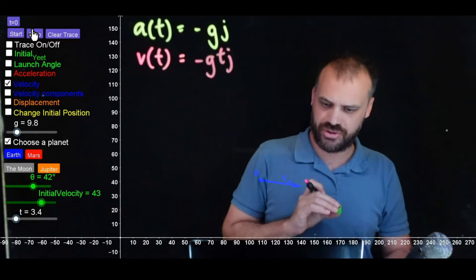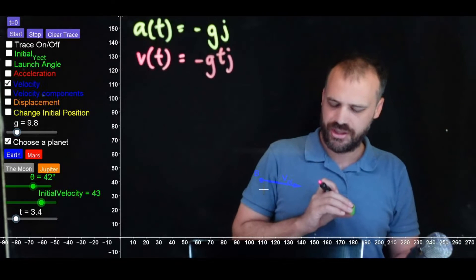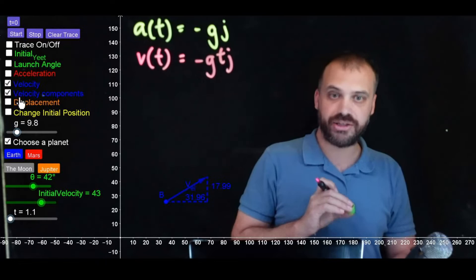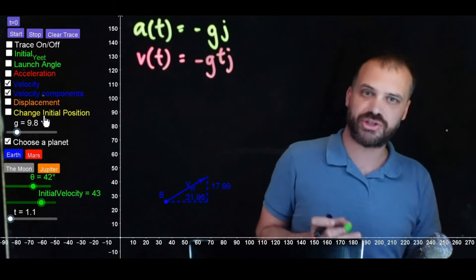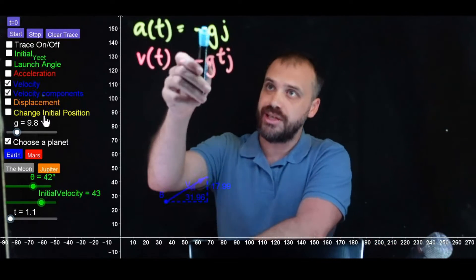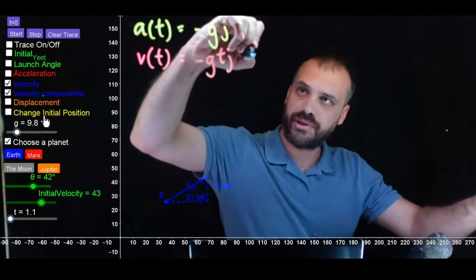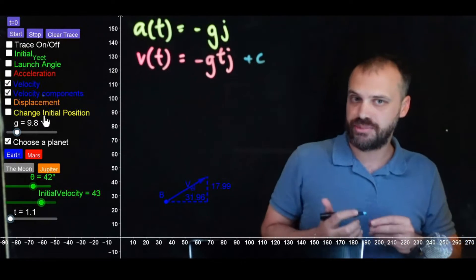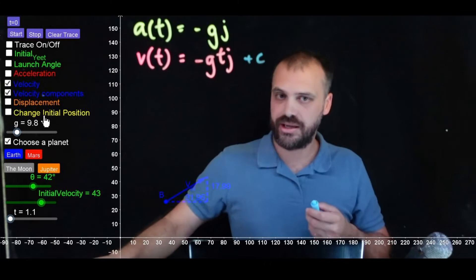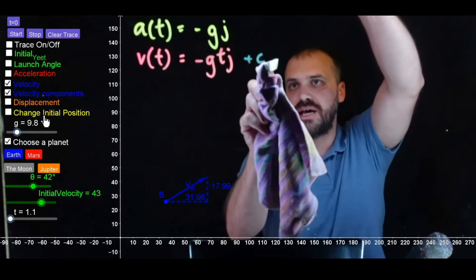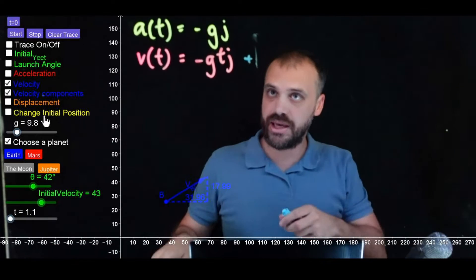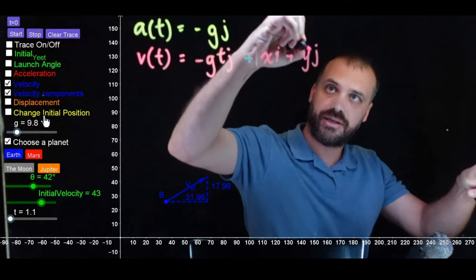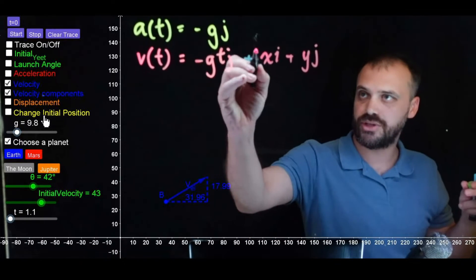You might think that's not going to describe this vector because this vector is made up of i and j components, and this only has j components. But I just integrated, which means there's a plus c on the end, and it's that plus c that's going to be important. The plus c is itself a vector, so we need to add some amount in the i component plus some amount in the j component.